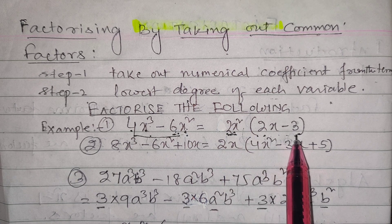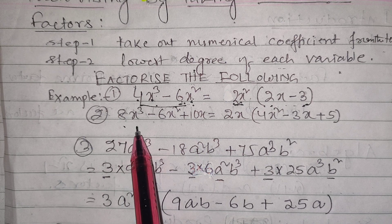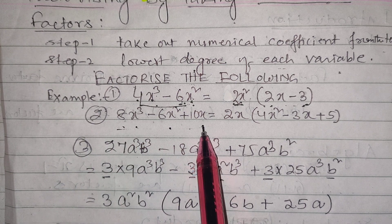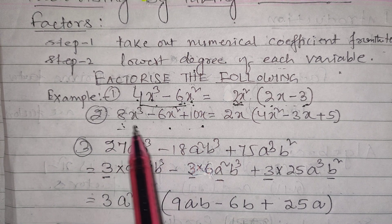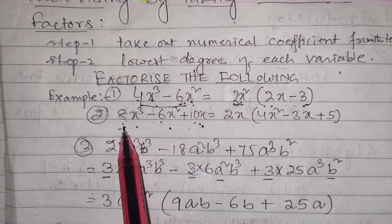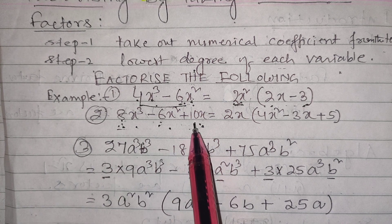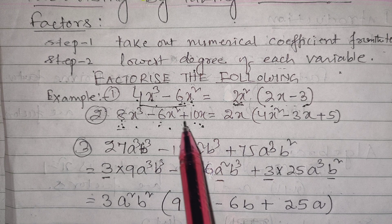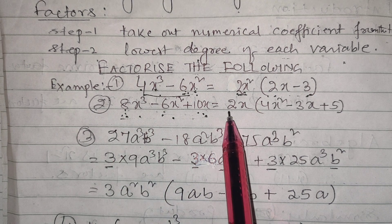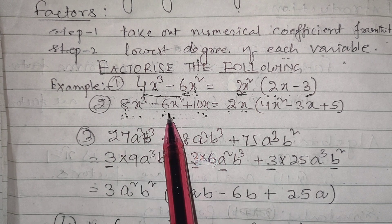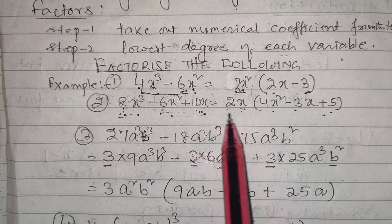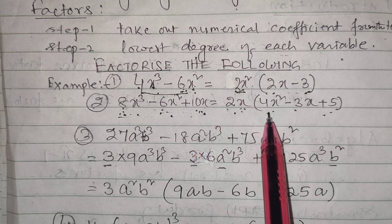Another example: 8x³ - 6x² + 10x. The numerical factors are 8, 6, and 10, and their common factor is 2. The lowest degree of x³, x², and x is x. So 2x is the common factor, giving 2x(4x² - 3x + 5). So 2x is one factor and 4x² - 3x + 5 is the other.